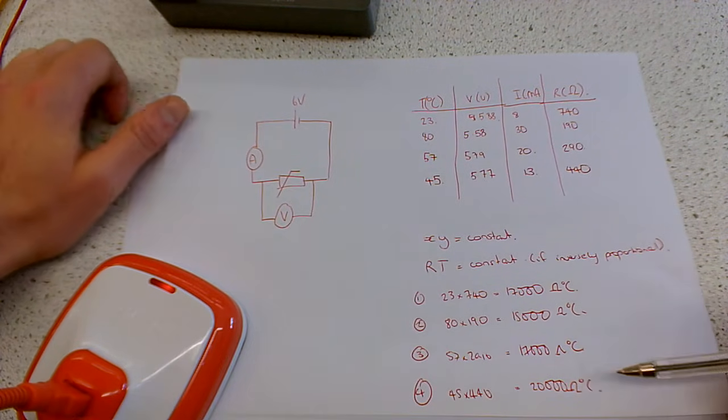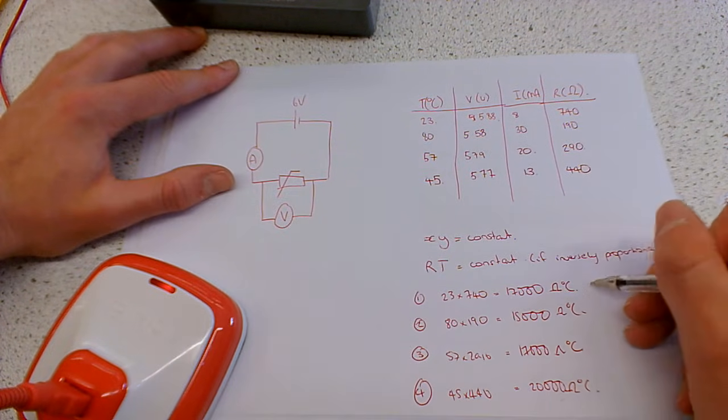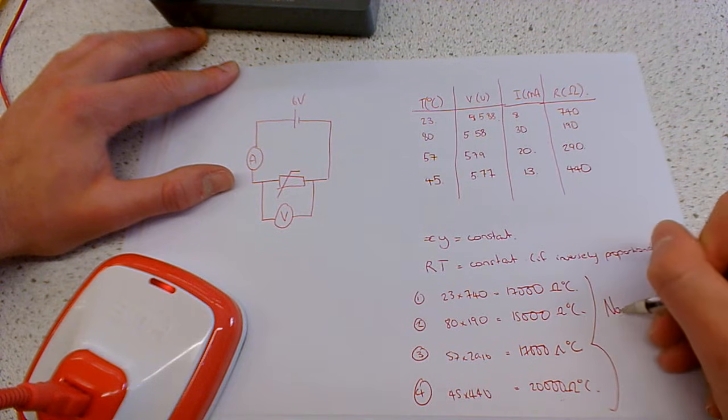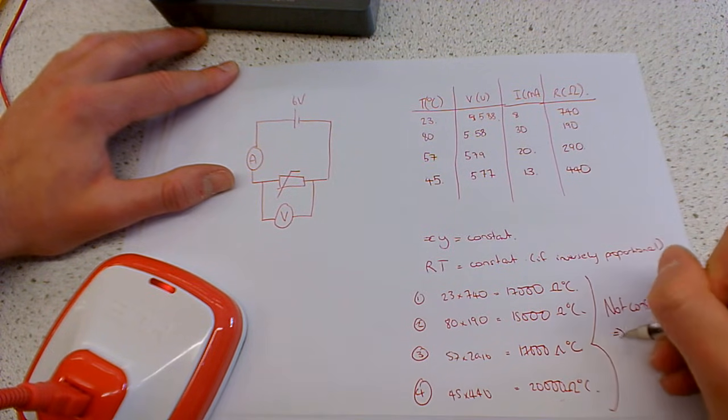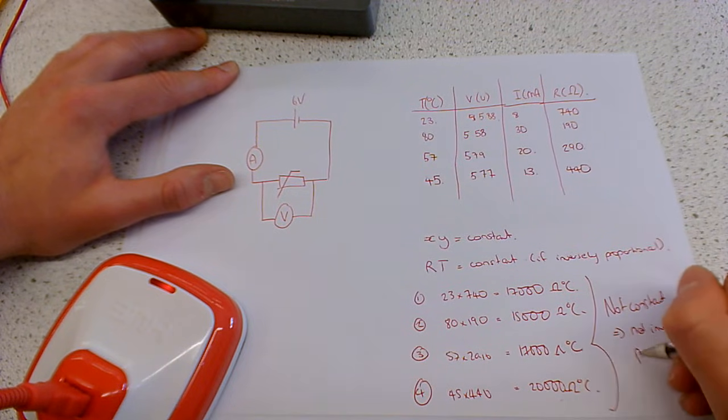So I don't think that would class as constant. So we're ranging from fifteen thousand to twenty thousand there. So I'm going to say not constant, therefore not inversely proportional.